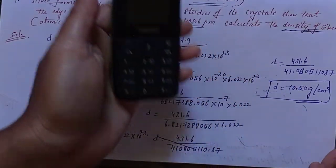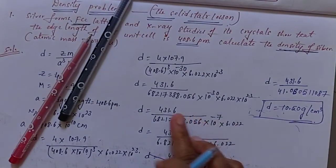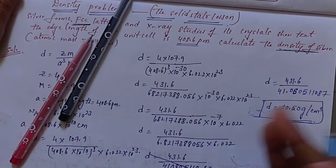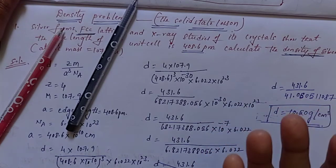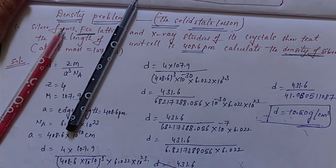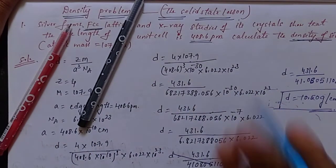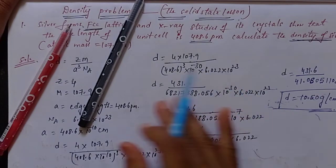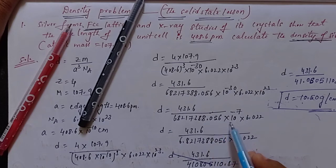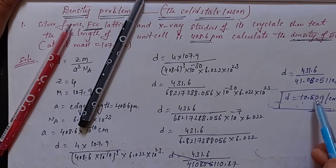So that is how you calculate it directly — don't go for any shortcuts. Some methods claim shortcuts to calculate cubes using patterns, but don't follow them as they cause confusion. Use the normal direct method: multiply 408.6 three times, then 10⁻³⁰ × 10²³ = 10⁻⁷, shift the decimal point 7 digits — and you easily get the answer.